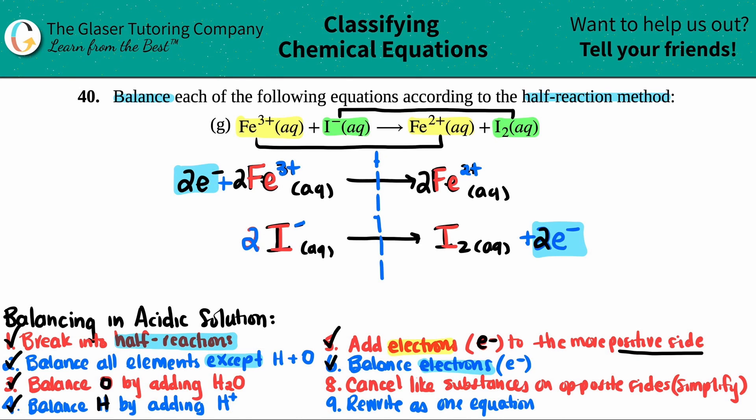Now we just have to cancel like substances out. So that includes electrons, if we had H pluses, if we had waters. But in this case, we only have one thing that's the same. It's the two electrons. They get cancelled out. Nothing else I can cancel out. They're all unique. I can't cancel out the irons because the charges are different. They have to be identical.